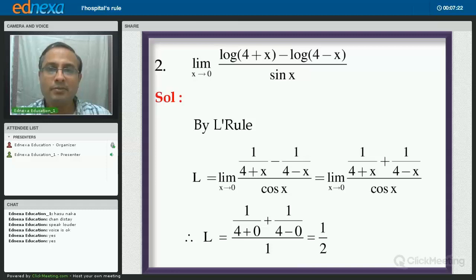Now, the next sum, limit of which function? log(4+x) minus log(4-x) upon sin x as x tends to 0. Is this a case where L'Hôpital's rule can be used? Yes, it is. How? Take the limit in the very first step. 4 plus 0 is 4. So, log 4 minus again log 4, which is 0 upon sin 0, that is 0. So, here we can use L'Hôpital's rule. So, as per the rule, what is the value of limit L? It is limit of which function? 1 upon 4+x minus 1 upon 4-x upon cos x.